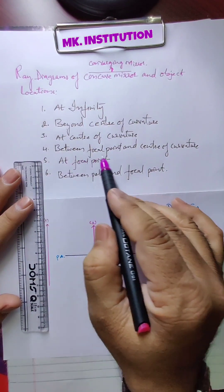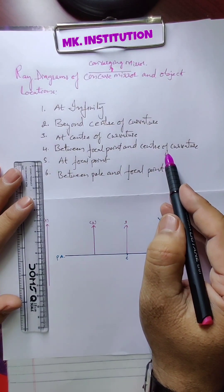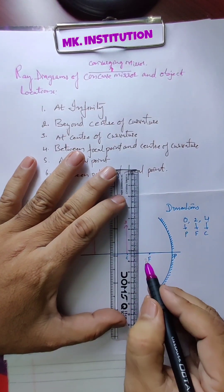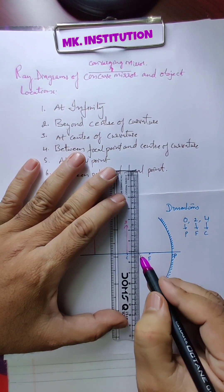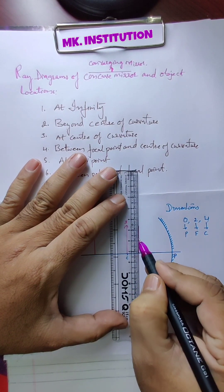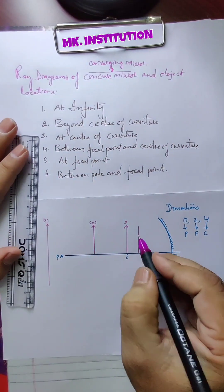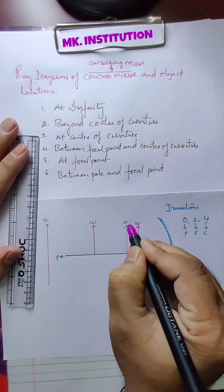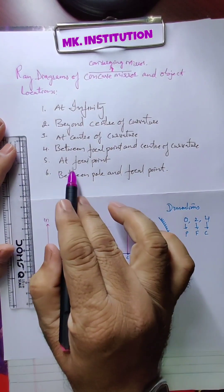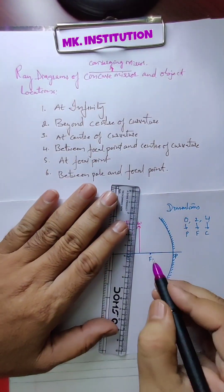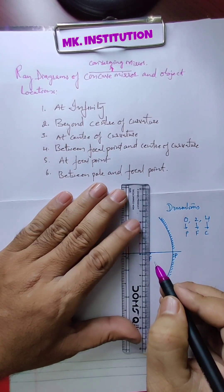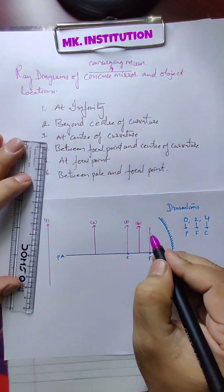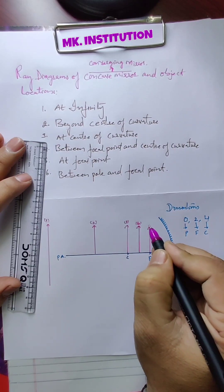What is the fourth location? Between focal point and center of curvature — the middle of this, here. So these are the fourth location. Now what is the fifth one? At focal point — it is the fifth location.